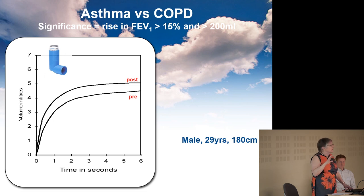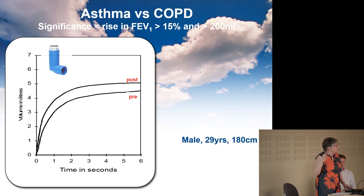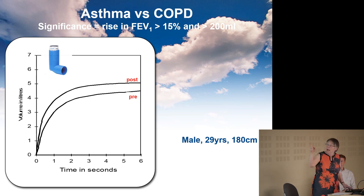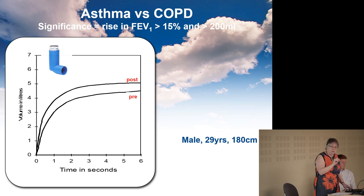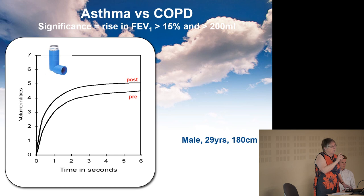An obstructive picture doesn't distinguish asthma from COPD — it just says something's in the way of blowing out. What we want to know is does it reverse? The classical definition of significant reversibility is a rise of more than 15% in the FEV1 and more than 200 mls. That is measurable significance. Whether it's clinically significant is a slightly different question, and there are two separate issues there.